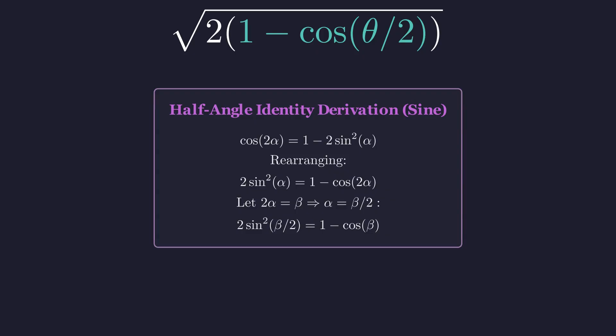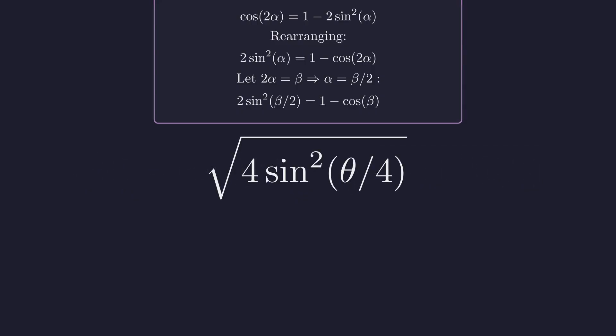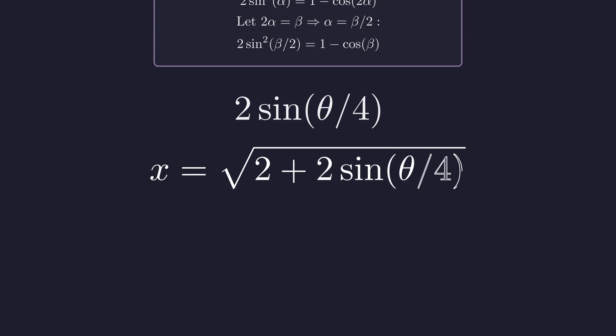This gives us 2 sine squared of θ over 2 equals 1 minus cosine β. Now we replace 1 minus cosine of θ over 2 with 2 sine squared of θ over 4. Again, 2 times 2 equals 4, giving us the square root of 4 sine squared of θ over 4. Since θ over 4 is in the first quadrant, its sine is positive. The expression simplifies to 2 sine of θ over 4. Plugging this result in, our equation simplifies even further.